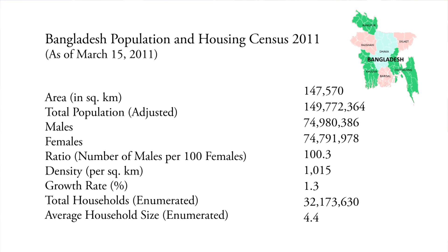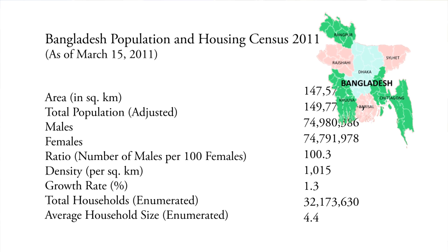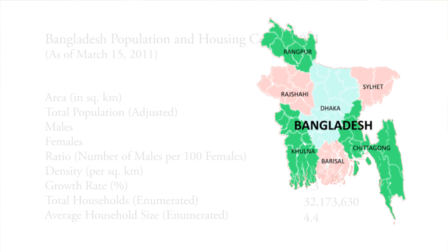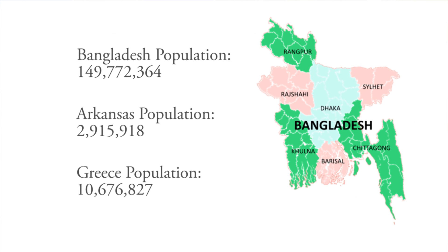One of the interesting things about that — and it's kind of why I put the map on the side — is that Bangladesh is about the same size as the U.S. state of Arkansas, or in Europe, Greece. So it really tells you just how densely populated that country is.